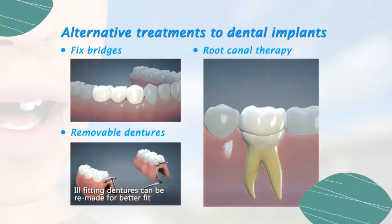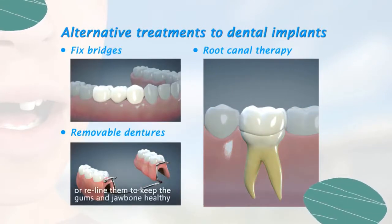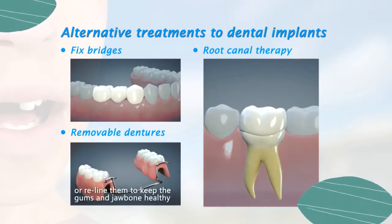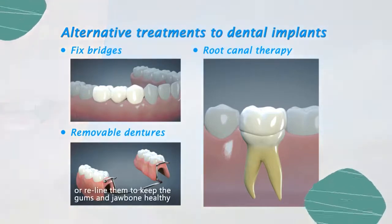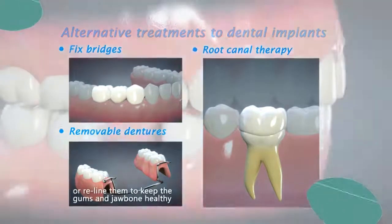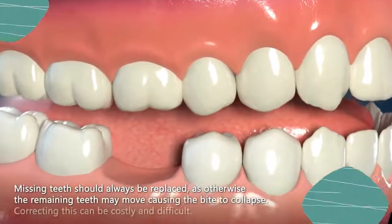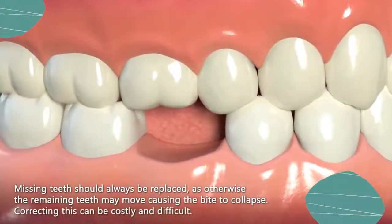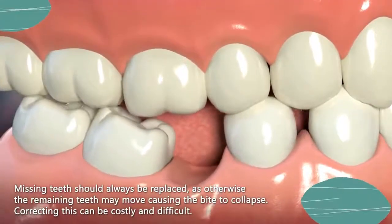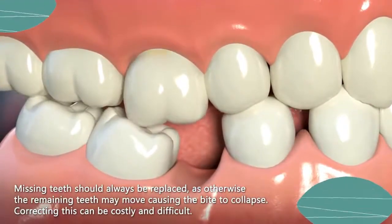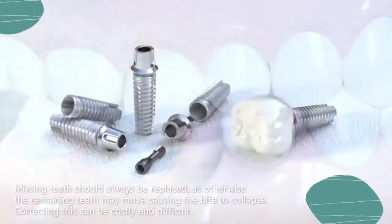Ill-fitting dentures can be remade to provide a better fit, or it might be possible to reline them. In order to keep the gums and jawbone healthy, missing teeth should always be replaced, as otherwise the remaining teeth may move, causing the bite to collapse. Correcting this can be costly and difficult.